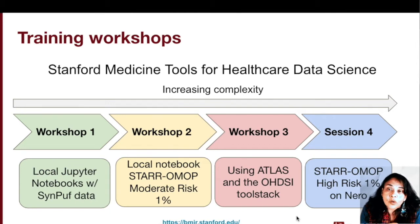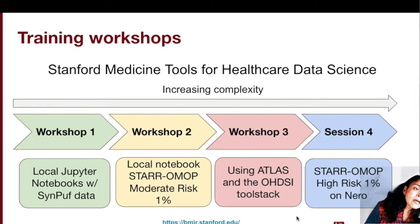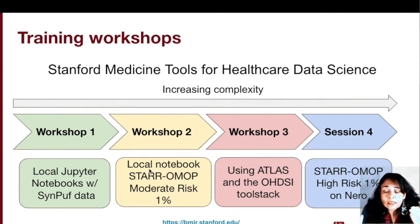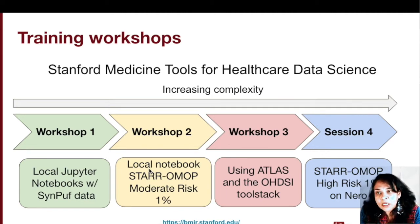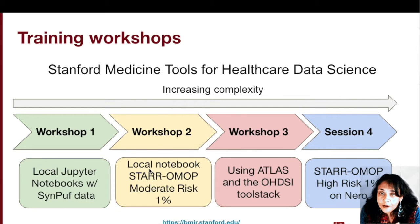Please see part two of tutorial one for the prerequisites to take these courses. The main goal for tutorial two is that by the end of this tutorial you should have experience querying a subset of the data in the Stanford Research Repository, or STAR. This subset, which we will refer to as the STAR OMOP DID-LITE, contains the STAR EHR data in the OHDSI Common Data Model OMOP CDM 5.3.1. This dataset is de-identified and classified as a moderate risk dataset, and therefore it can be accessed via Jupyter Notebooks from your local laptop.